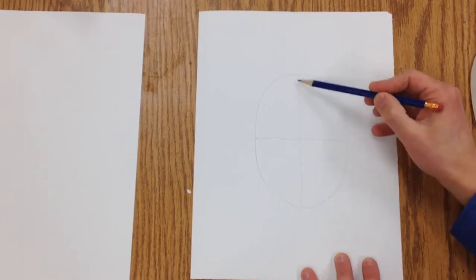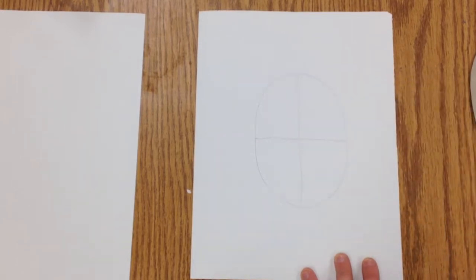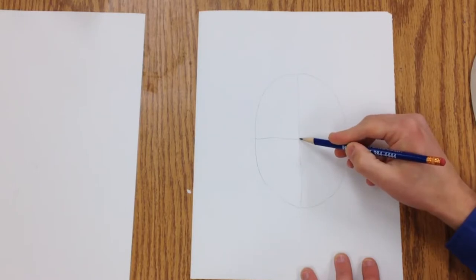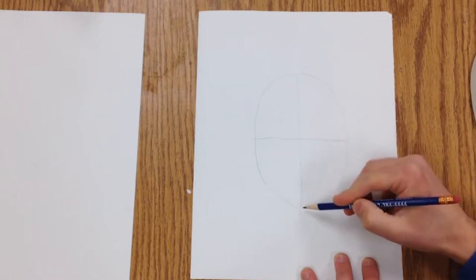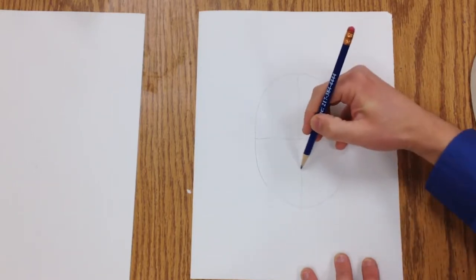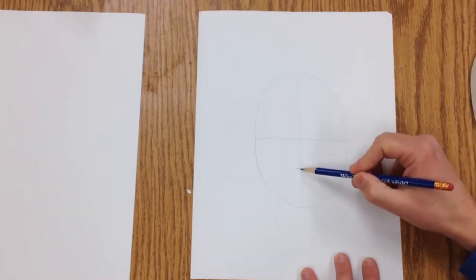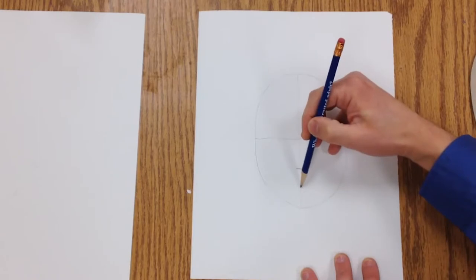So next, we're going to draw a line that's halfway between the eye line and the chin, and that's going to be where we place our nose later on. And then halfway between the nose and the chin is going to be where we put the mouth.